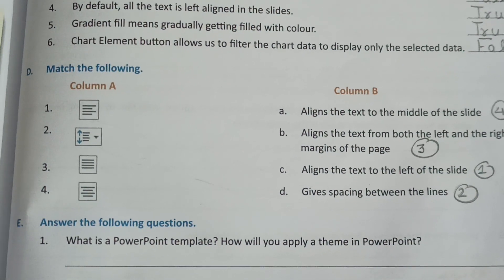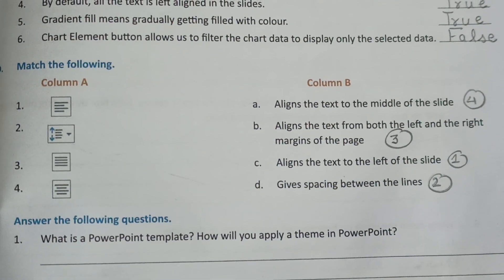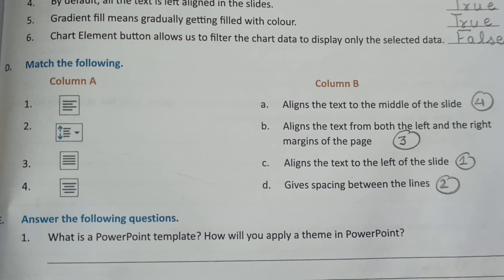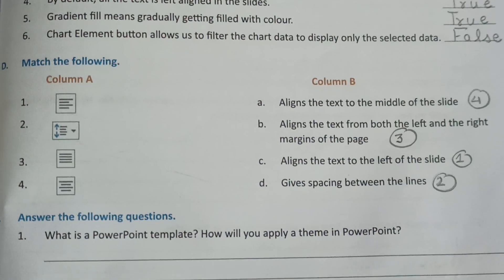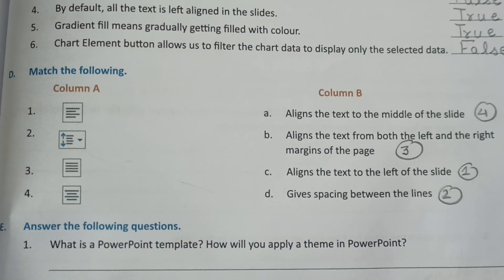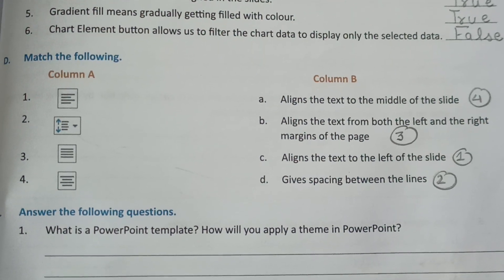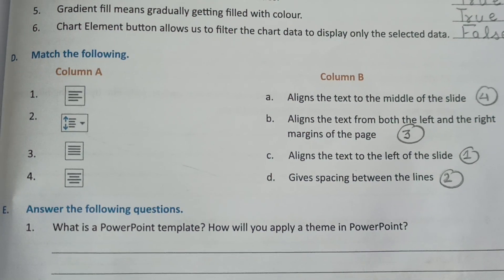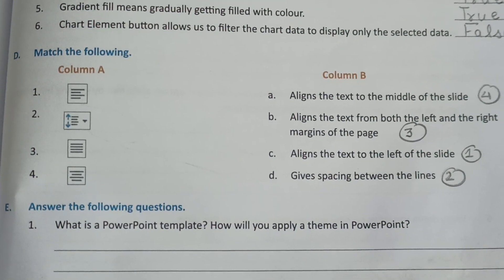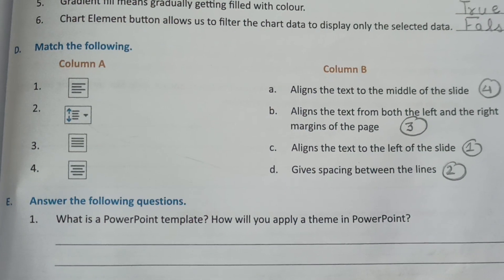Part D: Match the Following. Number one: Aligns the text to the left of the slide. Number two: Gives spacing between the lines. Number three: Aligns the text from both the left and the right margins of the page. Number four: Aligns the text to the middle of the slide.